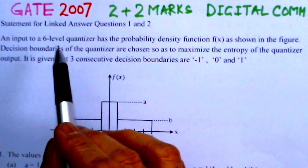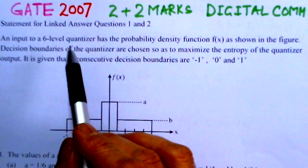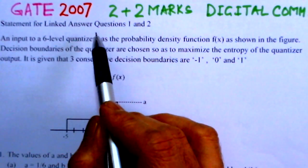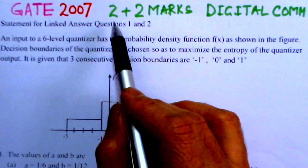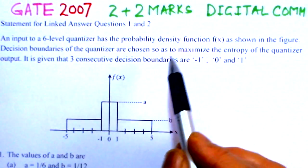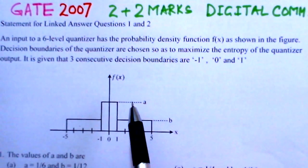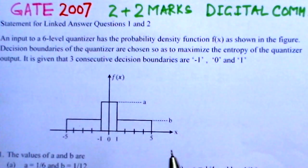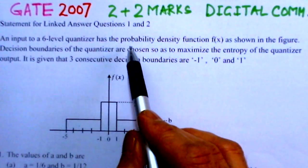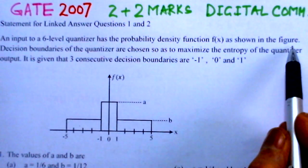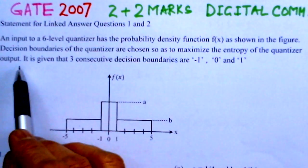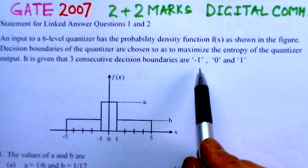The present problem is from GATE 2007 and is a linked answer type problem consisting of two parts, each of two marks. It comes under the area of visual communication. An input to a six-level quantizer has the probability density function f(x) as shown in the figure. Decision boundaries of the quantizer are chosen so as to maximize the entropy of the quantizer output.